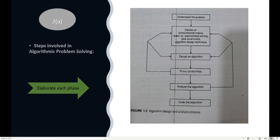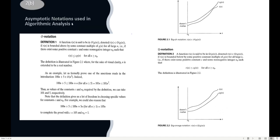After deciding computational means, you discuss data structures and algorithm design technique. Then comes the design phase — what kind of pseudo code to build, what flowcharts are needed. Next is proving correctness: you need to check correctness using mathematical induction, because if one case is not appropriate the entire algorithm cannot be applied. Then you analyze the algorithm — checking time complexity, space complexity, and simplicity. Finally, in the coding phase, you design the code for everything that needs to be built.